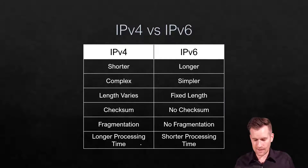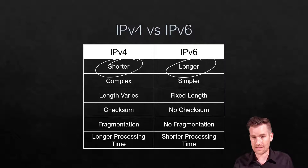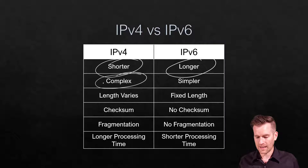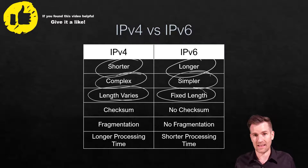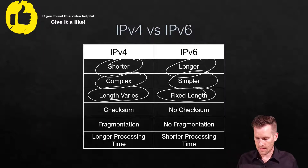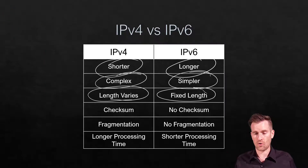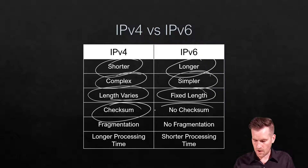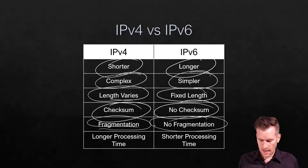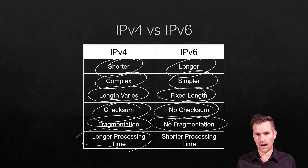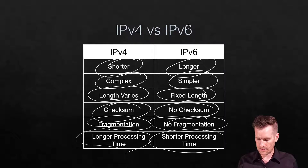In summary: IPv4 headers are shorter but more complex, with more processing involved; IPv6 headers are longer but much simpler. IPv4 can vary in length depending on options, while IPv6 is a fixed length, though extensions can add information outside the core header. IPv4 has a checksum; IPv6 does not. IPv4 supports fragmentation; IPv6 does not. All of this means IPv4 has a longer processing time and requires more CPU power, whereas IPv6 processing is much more efficient.